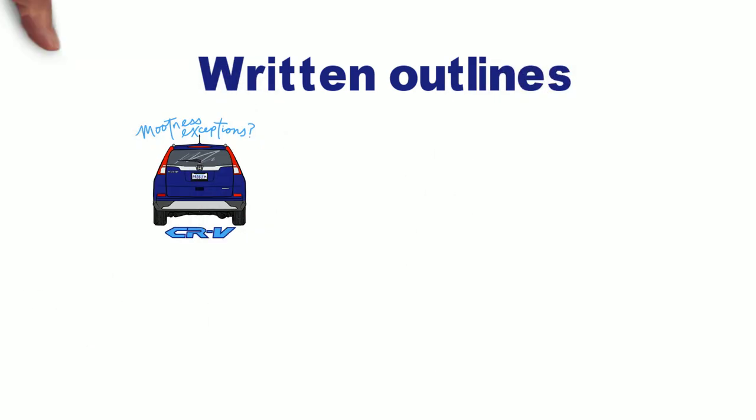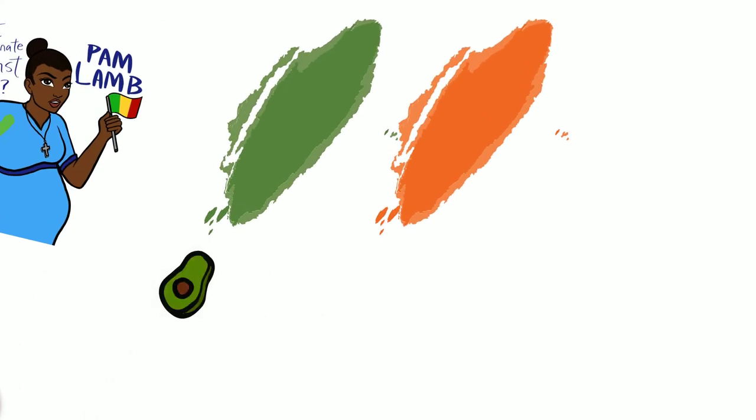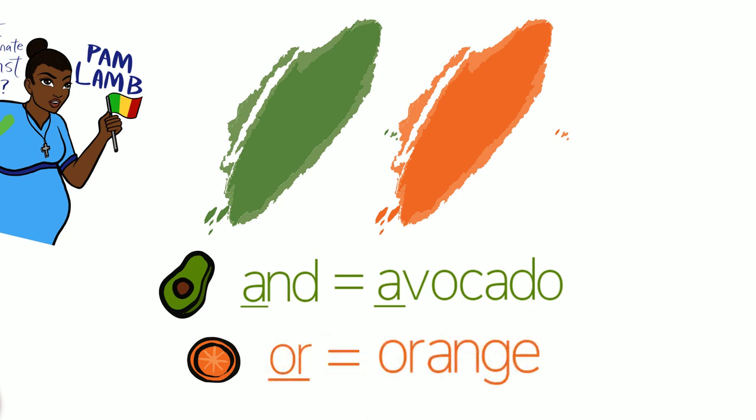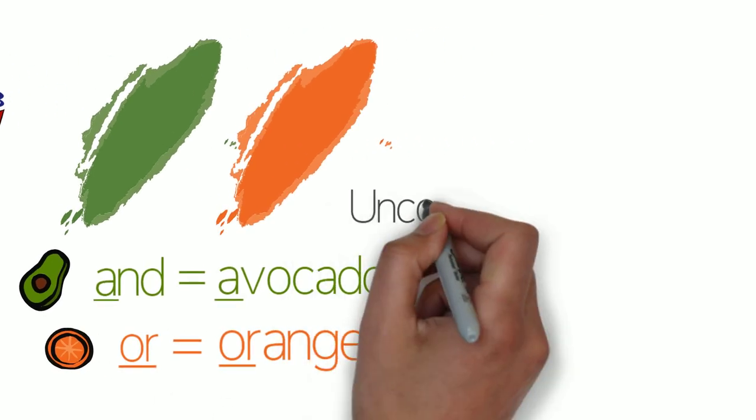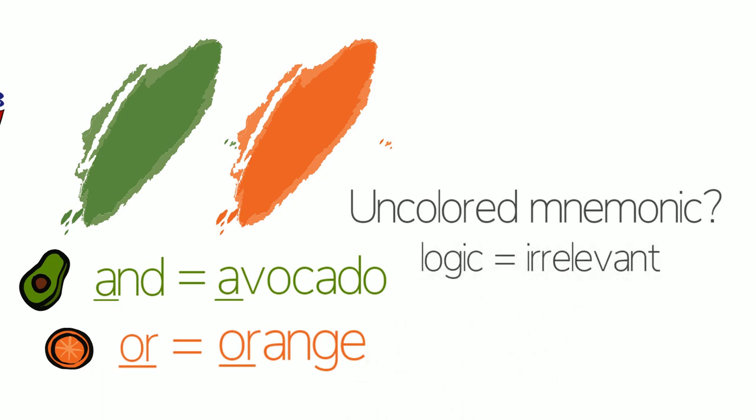Alrighty, before you go, there are a couple things you should know about Crescendo's written outlines. First, they've got awesome illustrations. Enjoy those. Second, you'll notice some green and orange coloring. Mnemonics are sometimes colored to clarify the relationship between their parts. If their parts are interdependent, all the parts are necessary. The avocado coloring is used. Think AND logic, which begins with A, and avocado, which begins with letter A. AND logic, avocado. Now, if each part is independently sufficient, then orange is used. OR logic, OR-ange, right? Now, sometimes mnemonics are uncolored because their connection logic is just not an issue. Maybe it's just a list of related concepts.